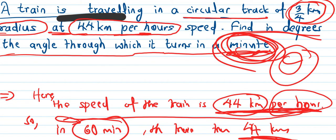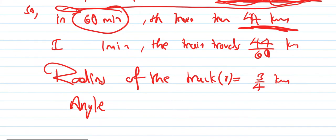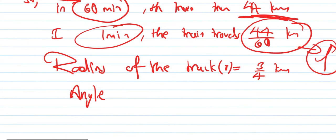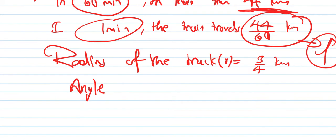The angle through which it turns in one minute - we need to find theta. So we have theta equals to L by R. The speed is 44 by 60 for one minute.